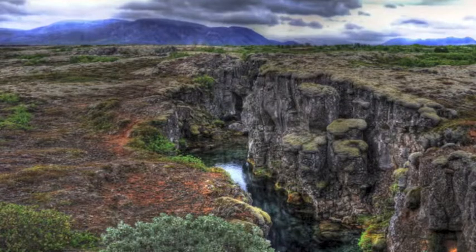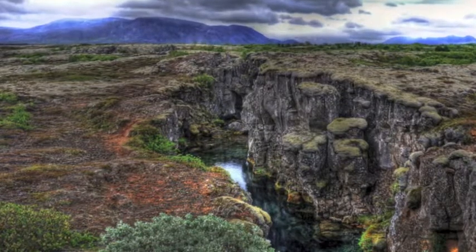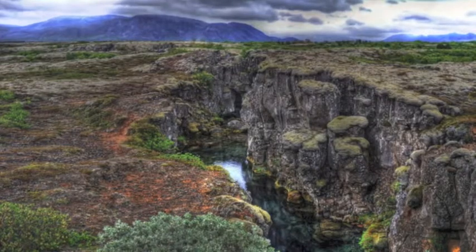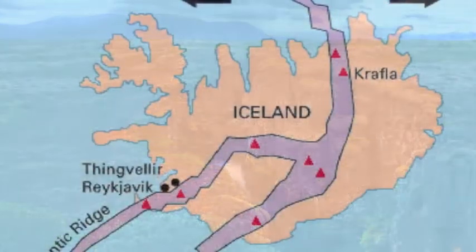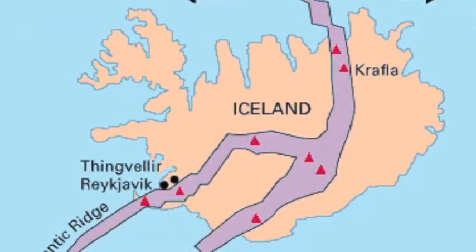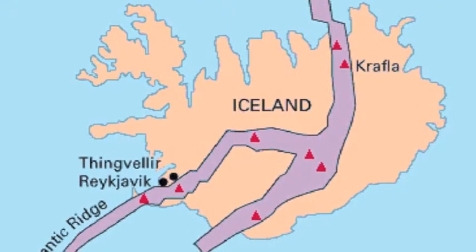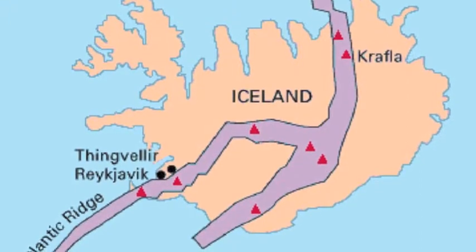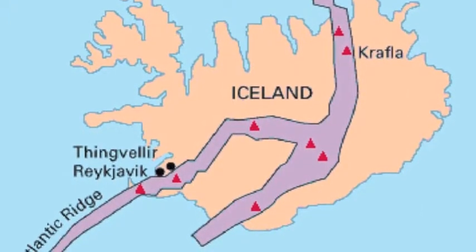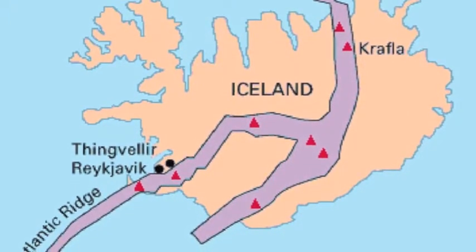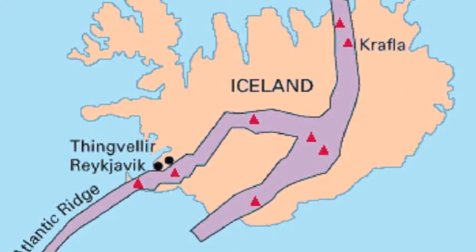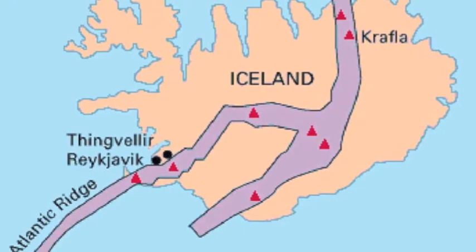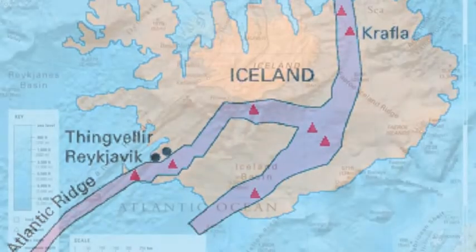The Mid-Atlantic Ridge is a mid-ocean ridge, a divergent plate tectonic boundary located along the floor of the Atlantic Ocean and part of the longest mountain range in the world. It separates the Eurasian plate and the North American plate in the North Atlantic, and the African plate from the South American plate in the South Atlantic. The ridge extends from a junction of the Gakkel Mid-Arctic Ridge, northeast of Greenland, southward to the Bouvet Triple Junction in the South Atlantic.